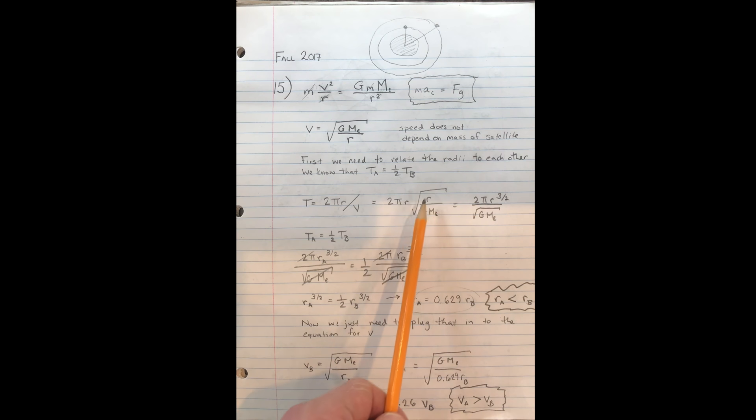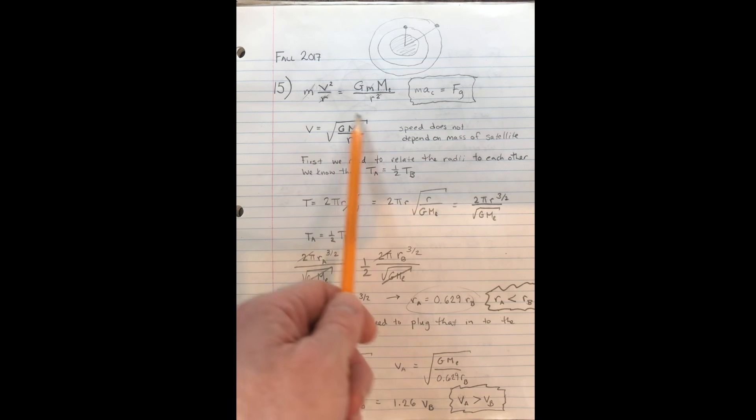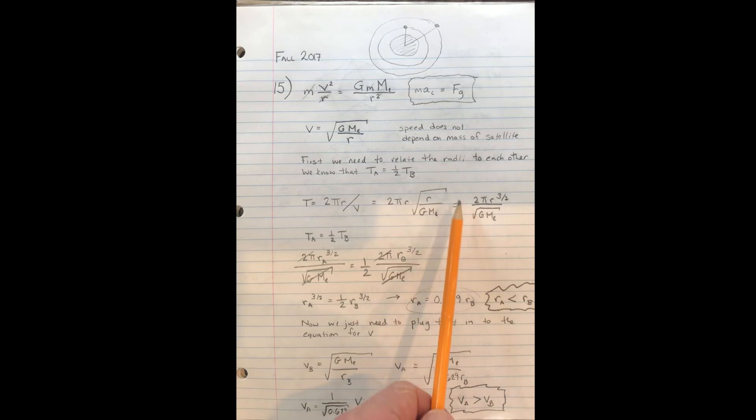We get 2πr divided by the square root of GME over r. This is just taking this formula and substituting it in for v. When we simplify that, we get that the period is equal to 2π r to the 3/2 over the square root of GME.